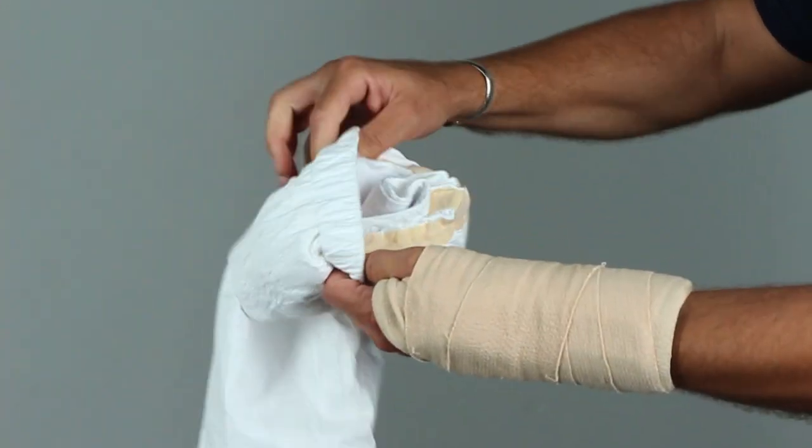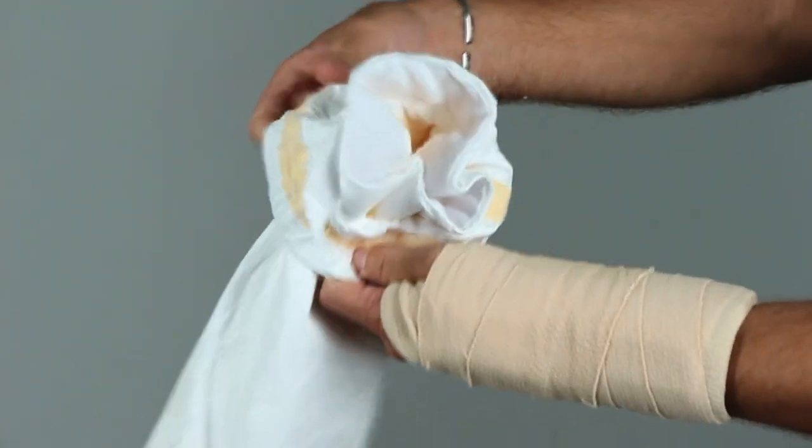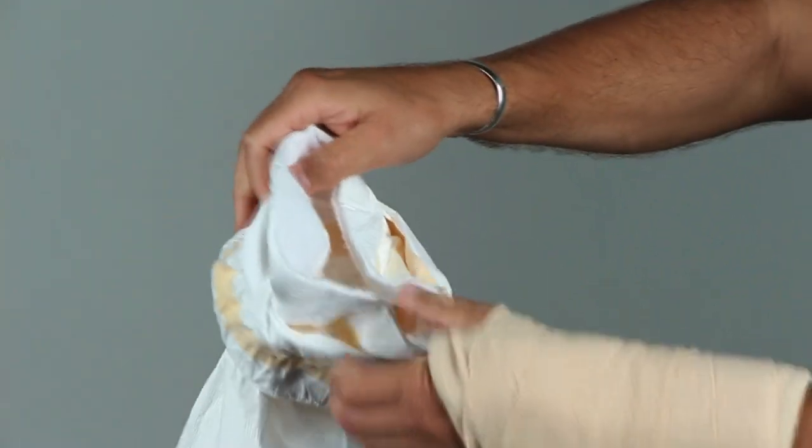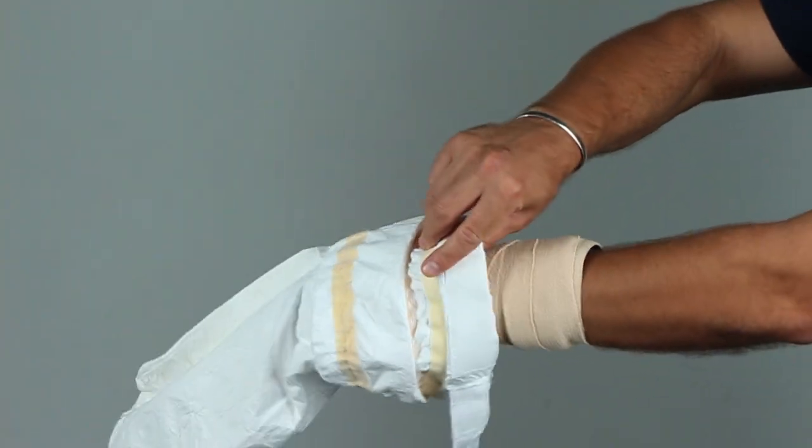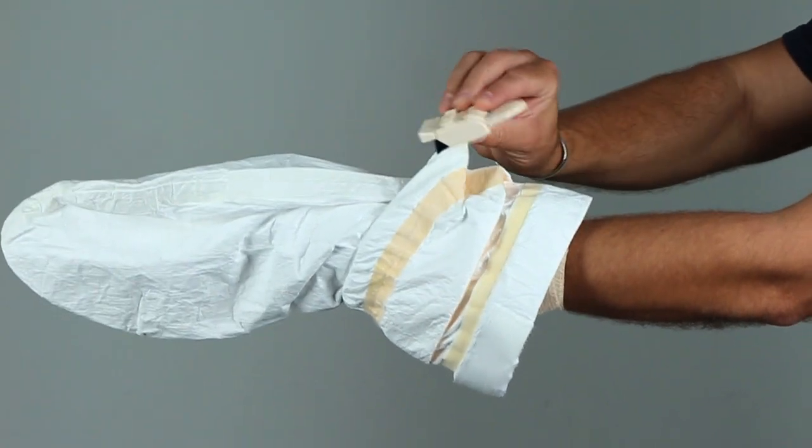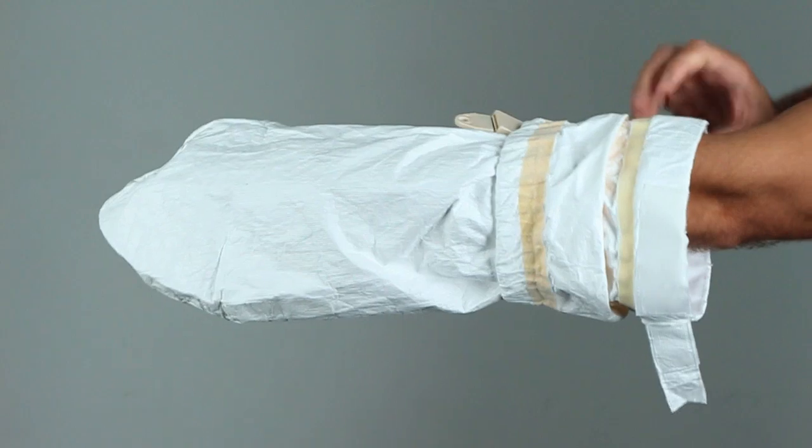Next, fold the top portion of the cover down and then insert your cast or bandage into the sleeve. It will be positioned correctly when the soft terrycloth material is touching your skin directly above the cast or bandage.